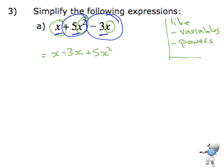So now when I look at this and say x, well, x is the same as 1x. 1x take away 3x leaves me with negative 2x plus 5x squared. And that's my final answer. Thank you.